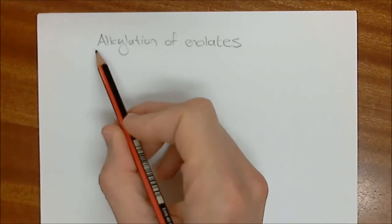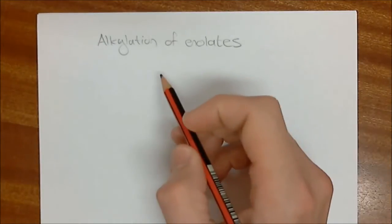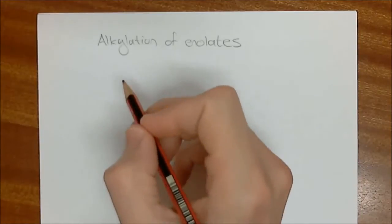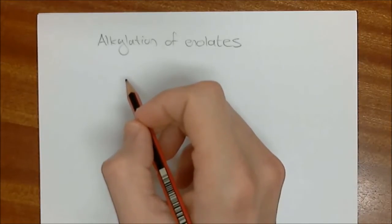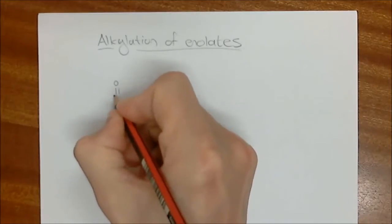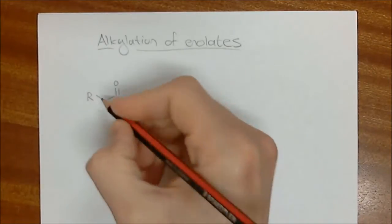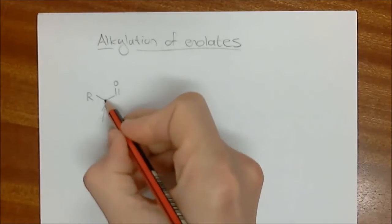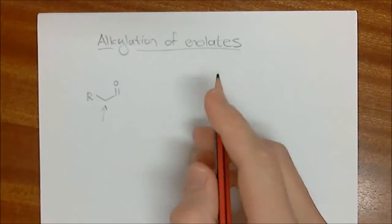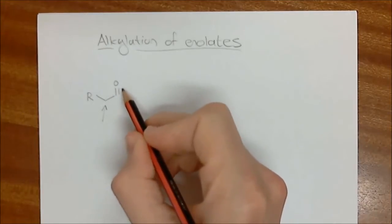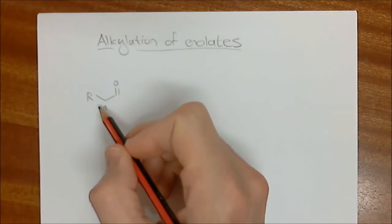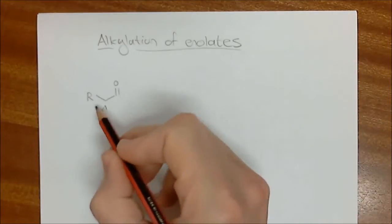We've been looking at alkylation of enolates. In the last lecture we looked at alkylating esters and carboxylic acids, and I introduced the aldehyde problem. Aldehydes are so reactive that when you generate an enolate, it reacts with another molecule in solution and we get a cross condensation occurring.